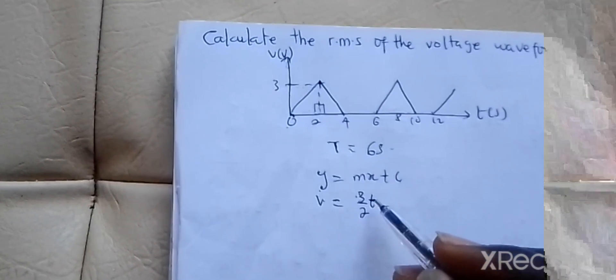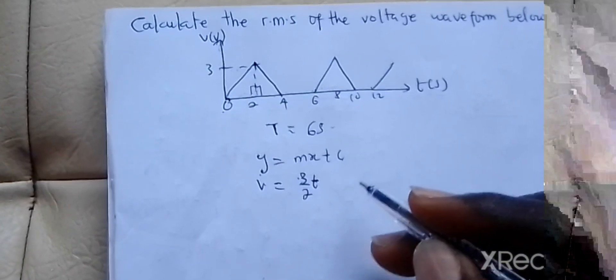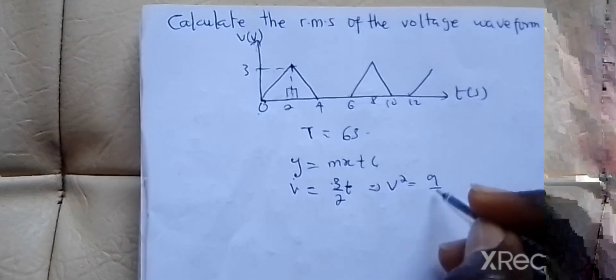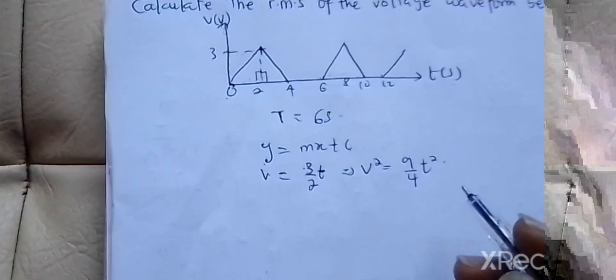We simply find the square of this, and this will give us V squared equals 9 over 4 T squared.